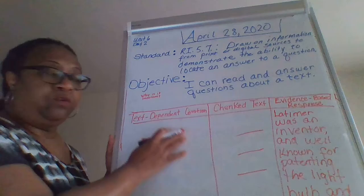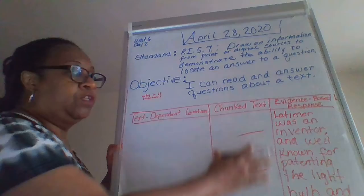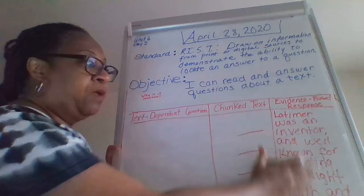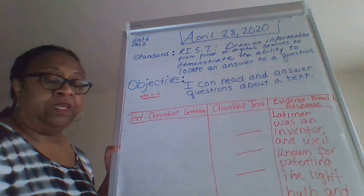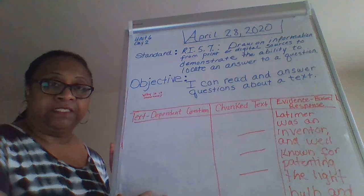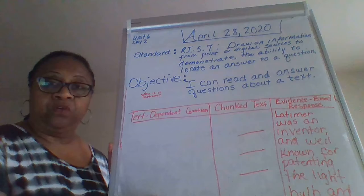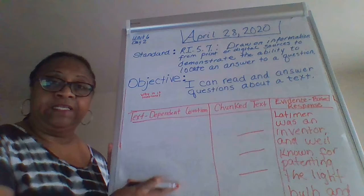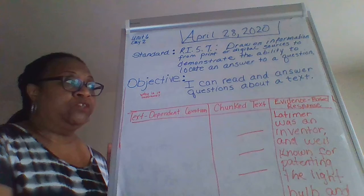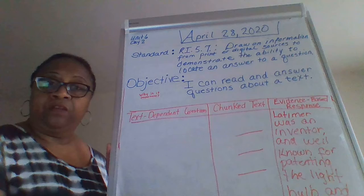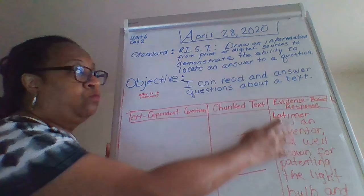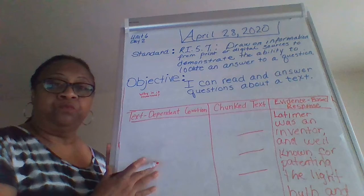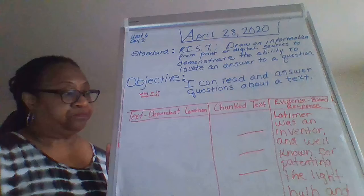This is how you will move through each question. You will read your question, answer it from the chunk text provided, and then write your response in the evidence-based response column — doing that for each question. In today's lesson I have also added an answer sheet, because I know many of you were having difficulty with the original document. So I've created an answer sheet in the Word document where you can write your evidence-based responses.